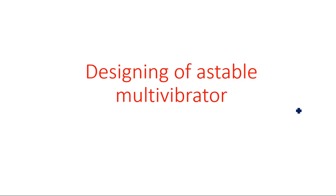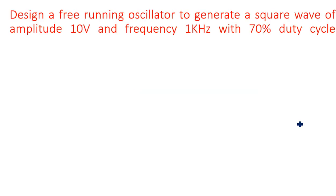Let us see one more example for designing a stable multivibrator with a different duty cycle and given amplitude. A question from previous papers asks: design a free-running oscillator to generate a square waveform of amplitude 10 volts and frequency of 1 kilohertz with 70 percent duty cycle. A free-running oscillator, also known as a self-generating circuit, is nothing but an astable multivibrator.